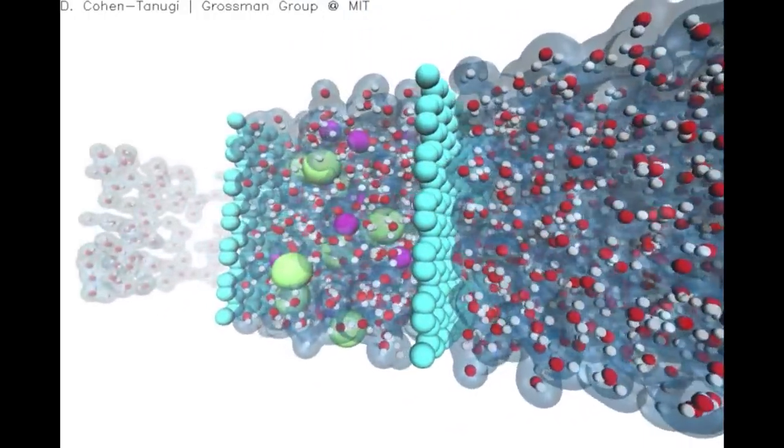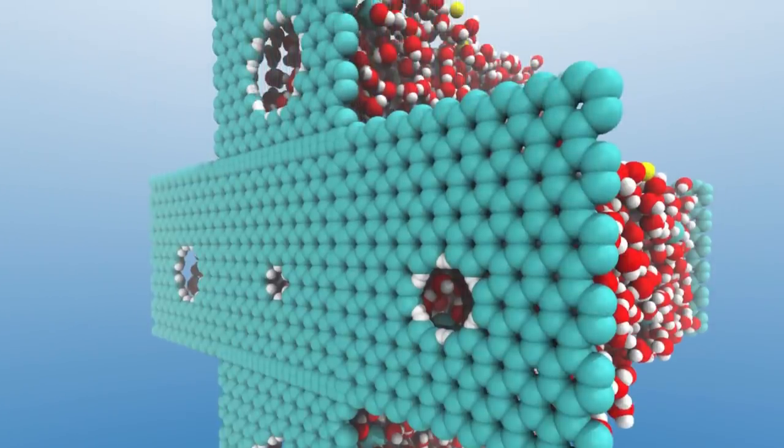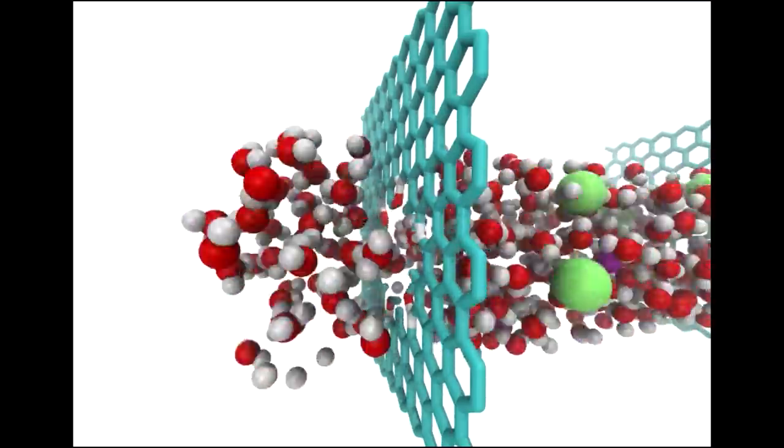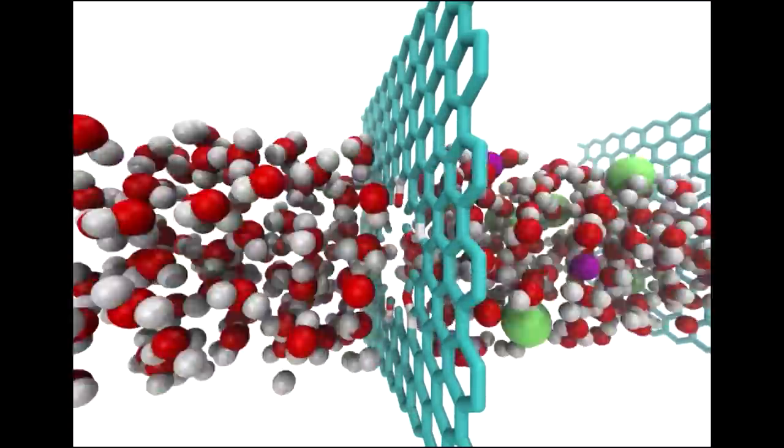The way to achieve this is to introduce small pores on the order of one billionth of a meter in the structure of graphene. If the pores are wider than water molecules but still narrower than solvated ions, our calculations demonstrate that water is able to flow across them while salt is blocked.